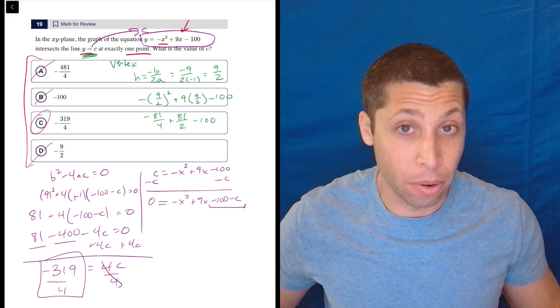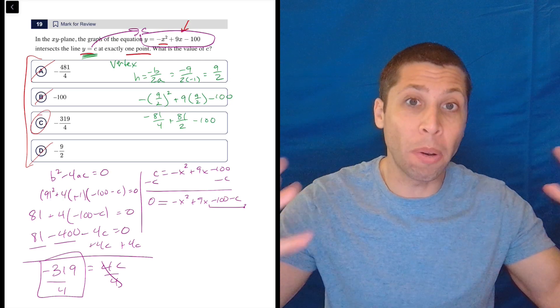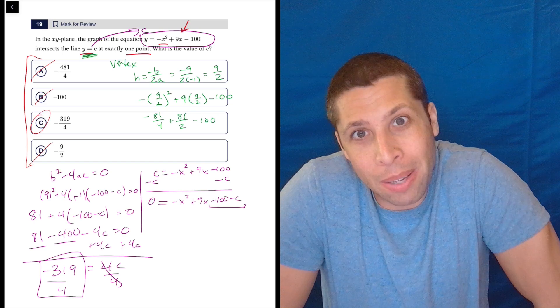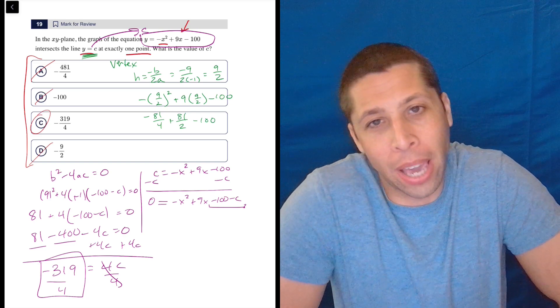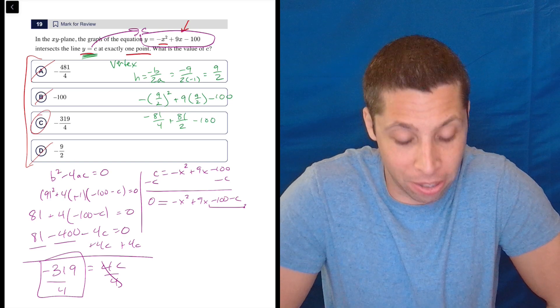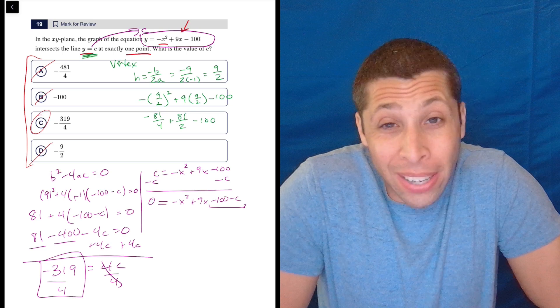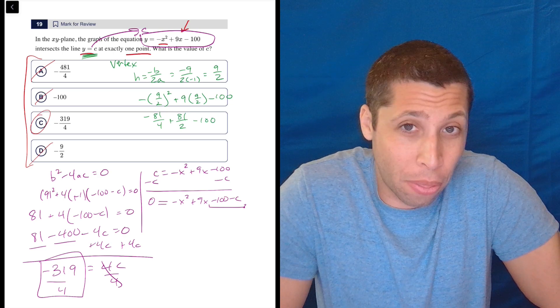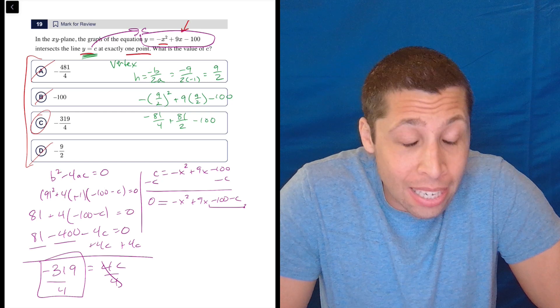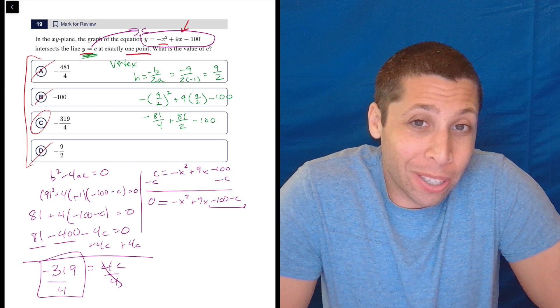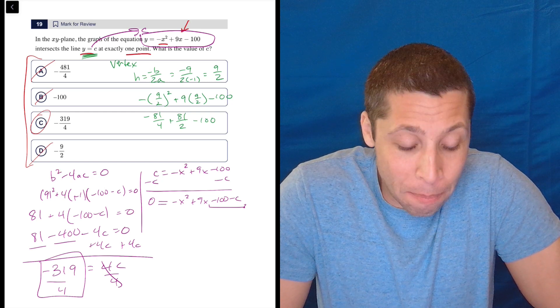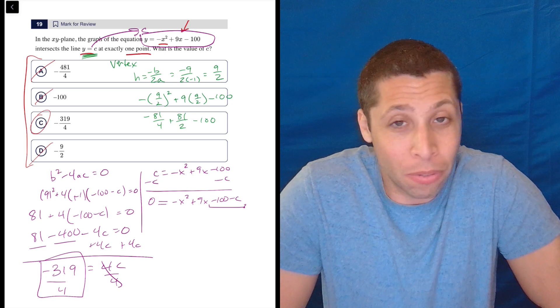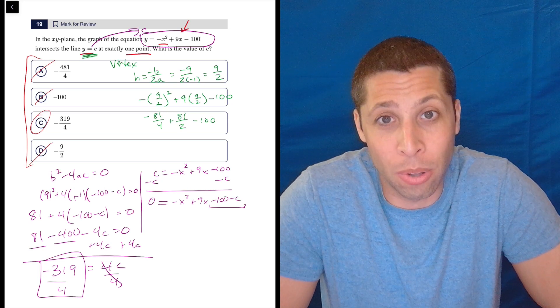I think that's the worst way to do it. That's the worst because there's just so many places to mess up. I mean, I guess with the answer choices, it's not so bad because if we lost a negative, we'd still probably be like, okay, I lost a negative somewhere. It's 319 over 4. But if we didn't have answer choices, we wouldn't know that kind of stuff. So we have a lot of opportunities with that discriminant method to make a mistake that just we don't catch. So I don't love it. But if we don't have the answer choices and it's not that we can use the vertex, we have no choice. We're going to have to do this discriminant thing.